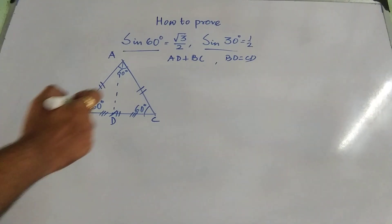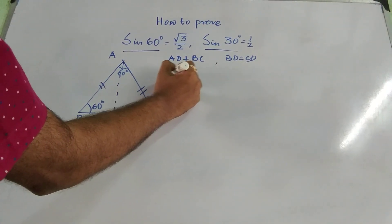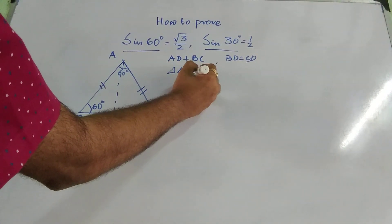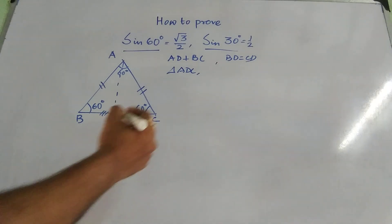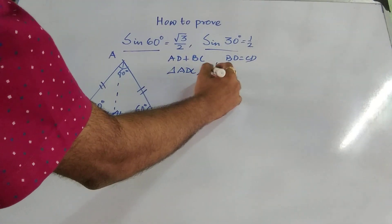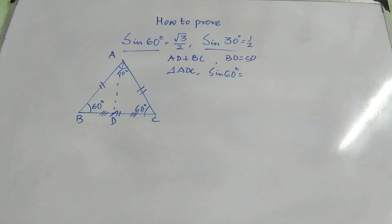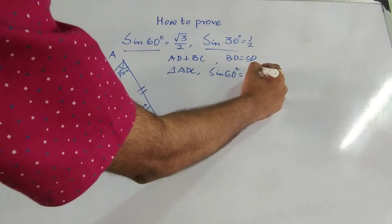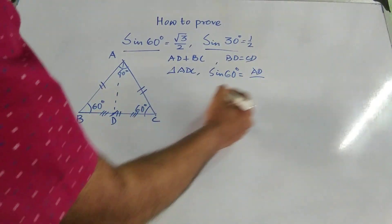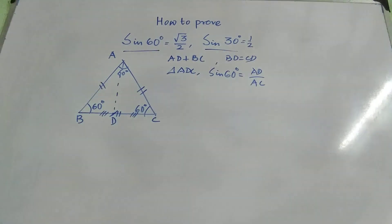Now, using Pythagoras theorem, if I consider the triangle ADC, right? So angle C is 60 degree. So for sin formula, we know sin 60 degree equal to perpendicular. That is AD divided by AC. AC is the hypotenuse, AD is the perpendicular.